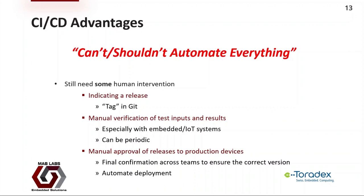One word of warning: don't go crazy and automate everything and completely eliminate human intervention. There is absolutely a need for some human in the loop. For example, the mechanism to indicate that a particular version of source code is ready to be released should be done manually — such as creating a tag in Git. Humans should periodically verify that the inputs and outputs of the testing infrastructure are still valid, especially when hardware is involved. In my opinion, approval of releases for deployment to devices out in the field should also be manual. Phase rollouts can be leveraged so that only a subset of devices receive an update, allowing additional field testing validation before a more complete rollout.